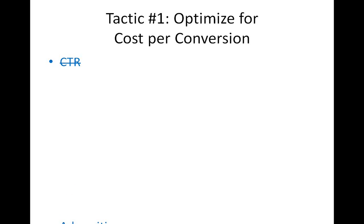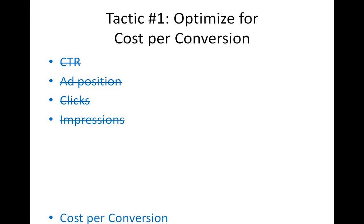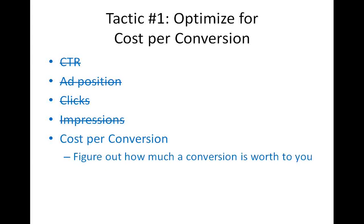CTR — click-through rate — it matters, but you shouldn't optimize your campaign just to have a really high CTR. Ad position matters; the higher your rank, the more clicks you'll get, but that's not what you should optimize around. Same thing for clicks — you want a lot of clicks, but only if they're profitable. Impressions — you want your ads shown to a lot of people, but only if those visitors become paying customers. Cost per conversion is the metric you want to focus on, and you need to figure out how much a conversion is worth to you before you start a pay-per-click campaign.